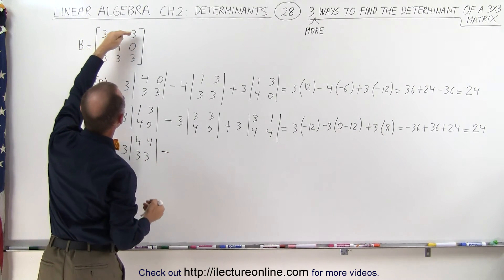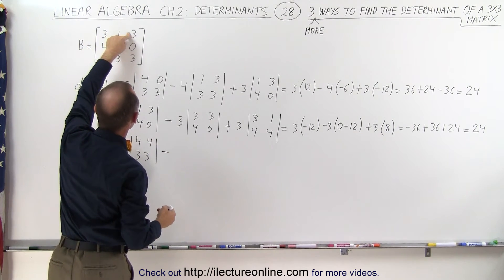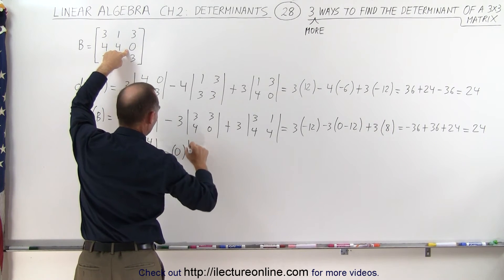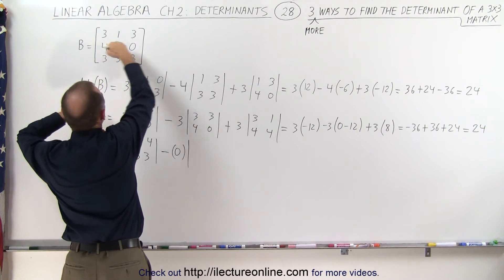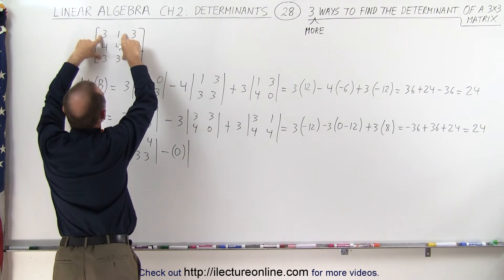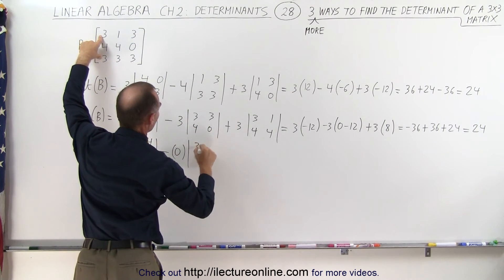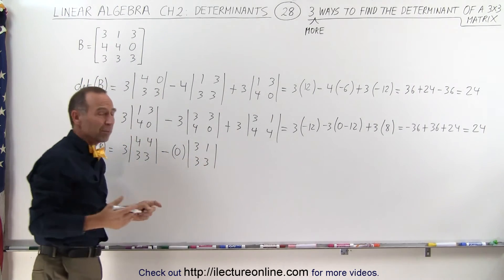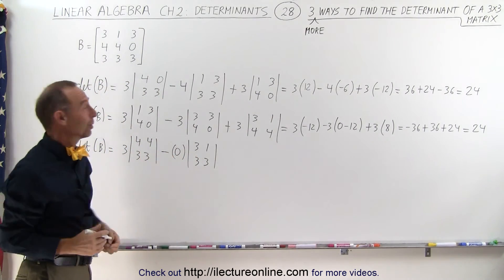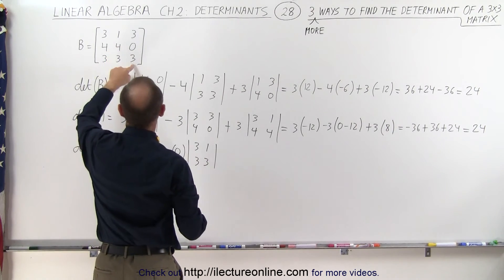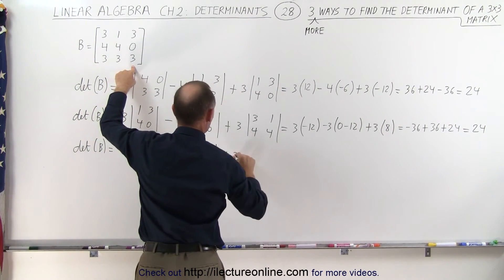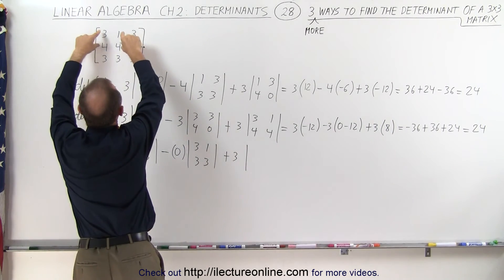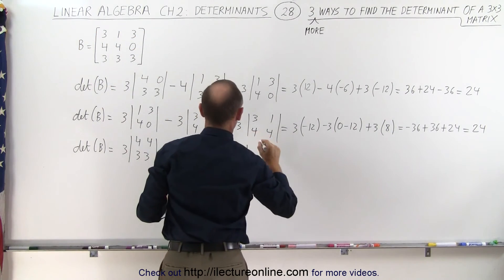Minus, because we skip one, so we go from 3 to the odd number here, which is minus 0. It doesn't matter in this case, because it's 0. Times, when we cross out this row and this column, we get those four elements: 3, 1, and 3, 3. This is just to illustrate it, because obviously 0 times anything, you're simply going to get 0. Then you get the bottom element, plus 3 times, when you cross out this row and this column, you end up with those four elements: 3, 1, 4, 4.